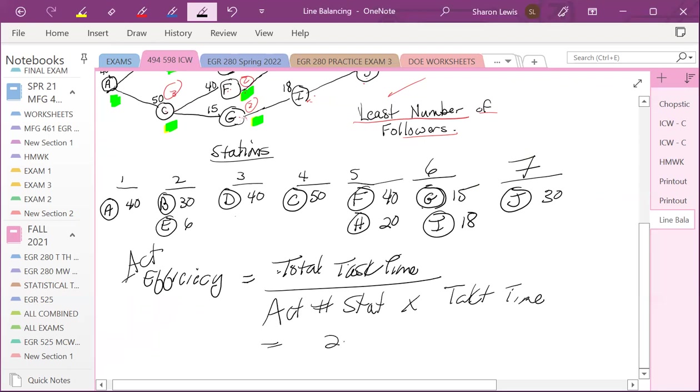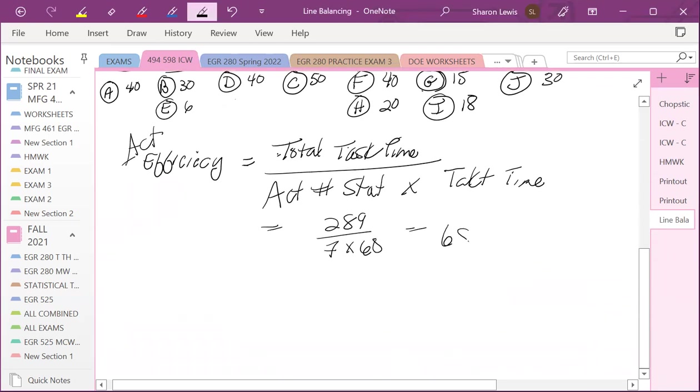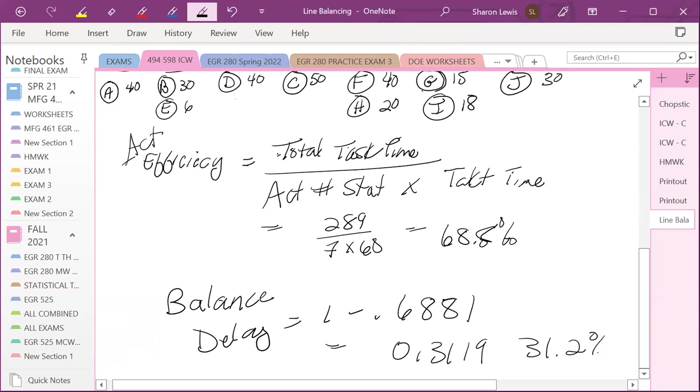So that is 289 divided by 7 times 60, and I believe that was in the 60 range, wasn't it? 289, 7 divide, 60 divide, 68.8% for our efficiency. So we beat that balance delay is going to be 1 minus that, minus 0.6881 is what it actually was. So that's going to be 0.3119 or 31.2% basically.